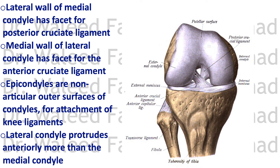The medial surface of the lateral condyle has a facet for the anterior cruciate ligament. The cruciate ligaments are named after their attachment to the tibia, not to the femur. So the anterior cruciate ligament attaches to a facet on the medial surface of the lateral condyle of the femur, while the posterior cruciate ligament attaches to a facet on the lateral wall of the medial condyle. The posterior cruciate ligament goes to the medial condyle, while the anterior cruciate ligament goes to the lateral condyle.